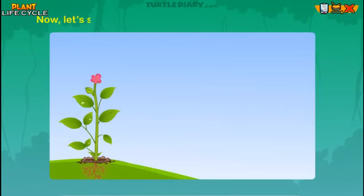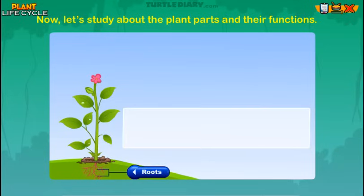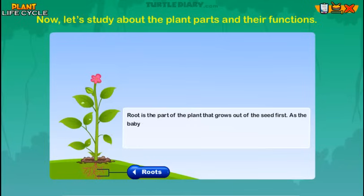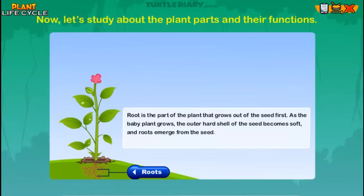Now let's study about the plant parts and their functions. The root is the part of the plant that grows out of the seed first. As the baby plant grows, the outer hard shell of the seed becomes soft and roots emerge from the seed. Roots take up water and minerals from the ground to be used by the plant.